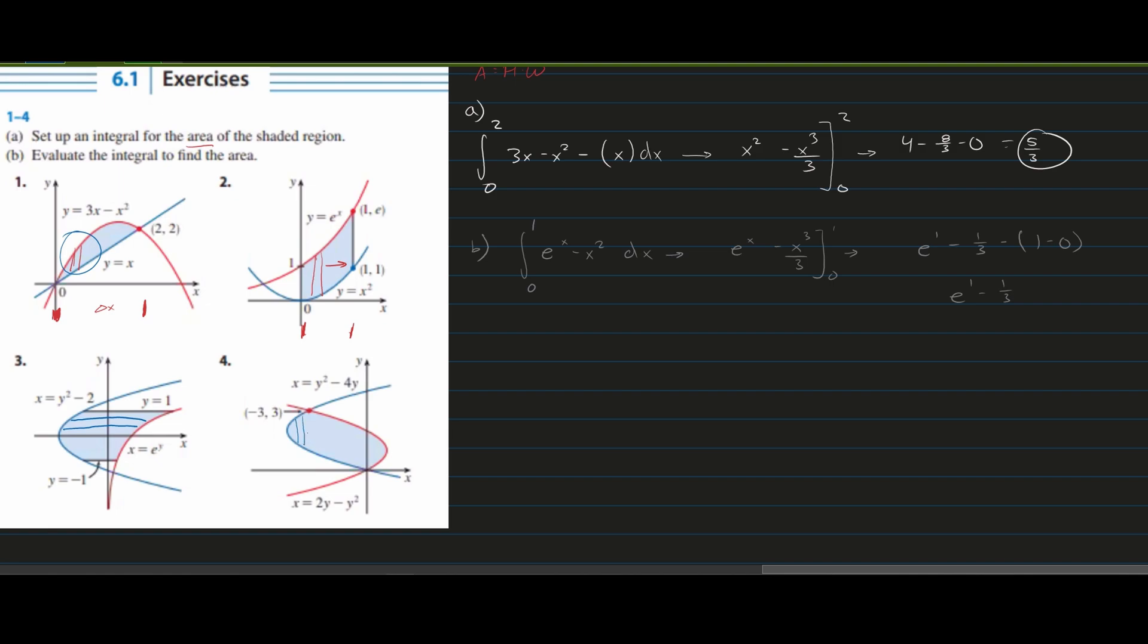However for this one it actually still would not work. We could not go vertically like this. That's because we would be using the same graph right here. And as I mentioned last time we cannot use the same graph when we're trying to find the area. So this one also has to be horizontal like this.